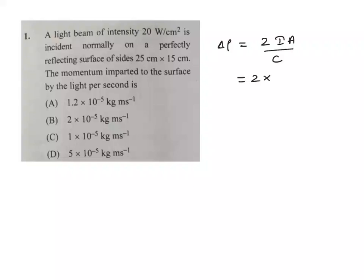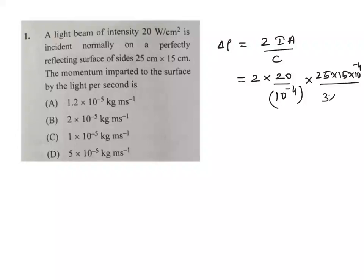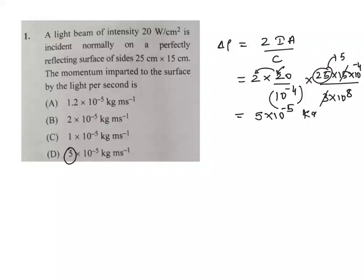Substituting: two into intensity 20 watt per centimeter square — convert that as 20 watt divided by 10 to the power of minus 4 per meter square — into area 25 into 15 into 10 to the power of minus 4 meters squared, divided by 3 into 10 to the power of 8. Working out: 25 into 5 is 125, into 2 is 250, into 2 is 500, so the answer starts with 5. Option D is the right answer: 5 into 10 to the power of minus 5 kg meter per second.